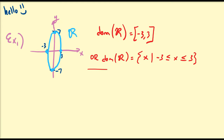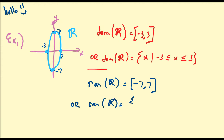We can also find the range by looking at the y values the relation obtains. The range of this relation is going to be all y values from negative seven to seven, which we can write as the interval negative seven to seven. Or in set notation, the range of r is the set of all y such that y is between negative seven and positive seven. And that's just based on looking at the graph.